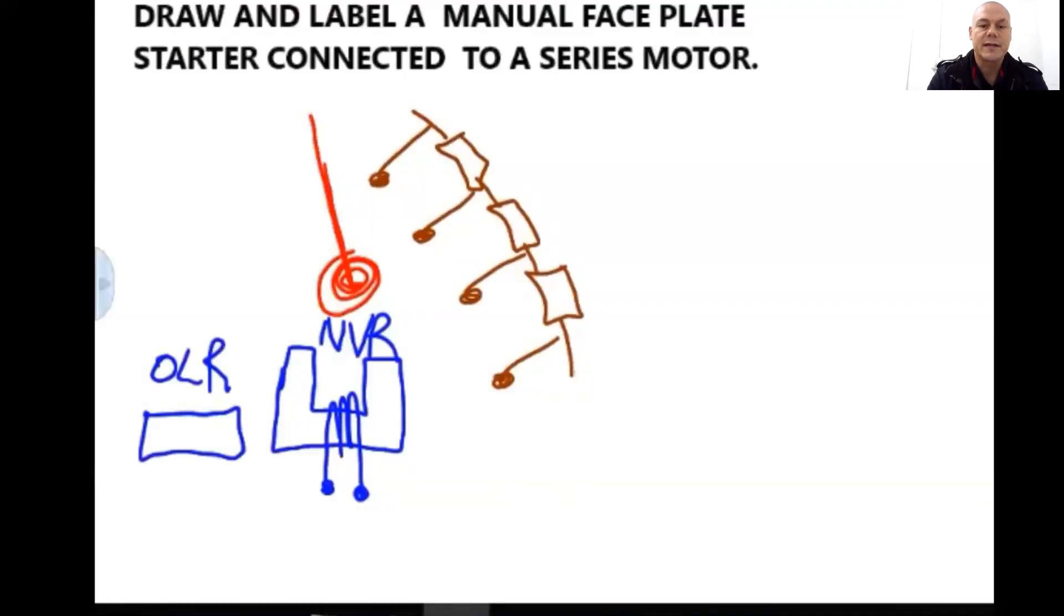The resistors are connected in series to the armature and because this is a series motor, the field winding is connected in series to the armature. Right, as I finish up this diagram, let me just explain the operation to you.